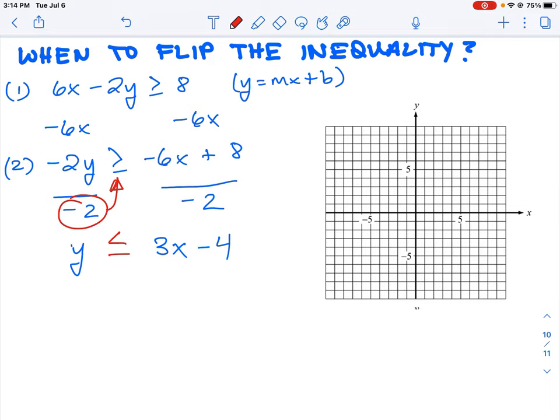So if the inequality is greater than or equal to, our new form will be less than or equal to. That's the rule for flipping the inequality when you divide by a negative value.